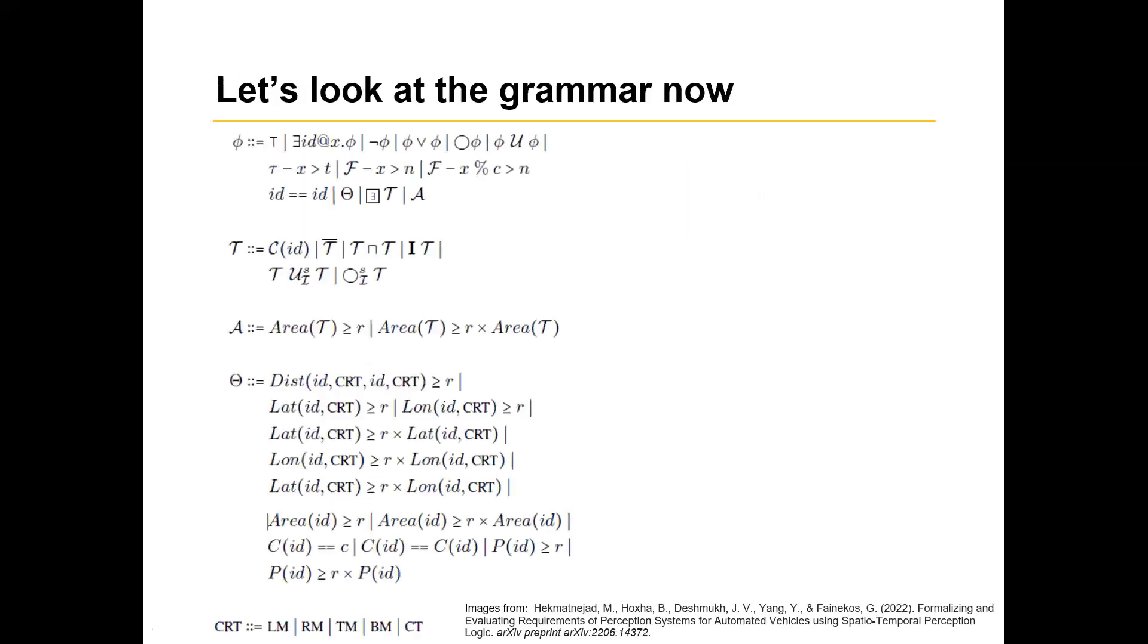Let's take a hint at grammar now. So the grammar is pretty complex, but let's go step by step. Since I've taken images, they are a little bit scattered. But let's just look at the first block. So the first block basically gives you grammar or syntax about how do we freeze time. This is the second one. There exists ID at particular X, at particular frame. Then you have the Boolean operators, you have the next operator, you have the until operator.